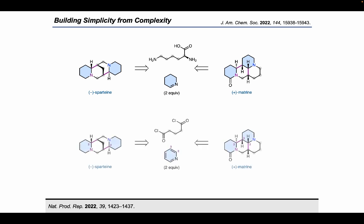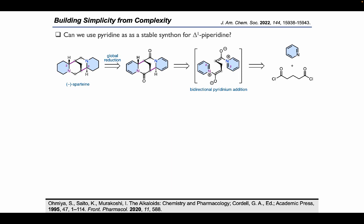We thought we could simplify this and use pyridine as a stable, inexpensive synthon for piperidine imine, and use gluterochloride instead of lysine as our linker, and to act as an activating agent for pyridine. We hypothesized that pyridine and gluterochloride could react to give a bidirectional pyridinium enolate, which could then form the tetracyclic scaffold of spartine in a single step. We could then perform a global reduction to give us access to the natural product.